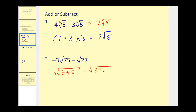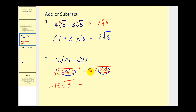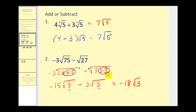27 is three times three times three. Remember, our index is two, so we're looking for perfect square factors. There's a perfect square factor, and there's a perfect square factor. So if we already have a three here, and this will simplify to five, three times five would be 15 — or negative 15 square root three — minus, here we have the square root of three squared, that would be three, and then we're left with square root three. So now we do have like radicands, we can go ahead and combine these terms by subtracting the coefficients. Negative 15 minus three would be negative 18 square root three.